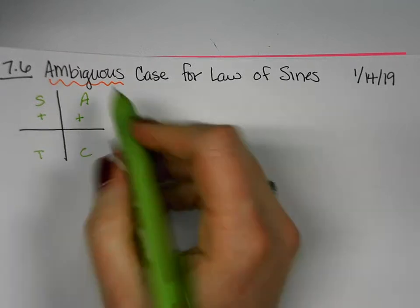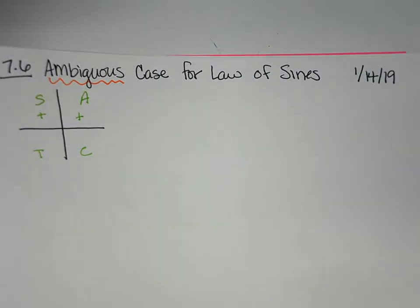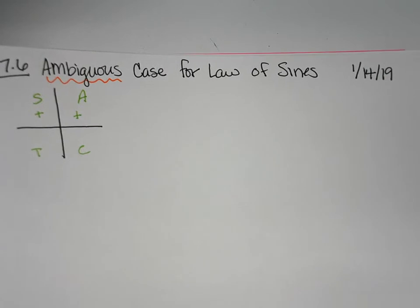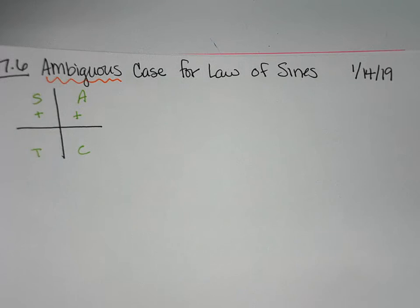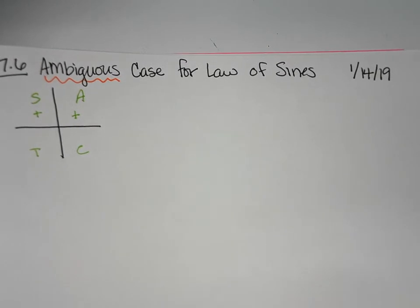For example, if you solve for an angle and get 45 degrees, and another given angle is 50 degrees, you could end up with either the acute or the obtuse version of that angle. So you sometimes end up with two sets of triangles from the same information. We're going to go through cases where we get two triangles, one triangle, or no triangle at all because the values just don't fit — all three scenarios of how law of sines could work.